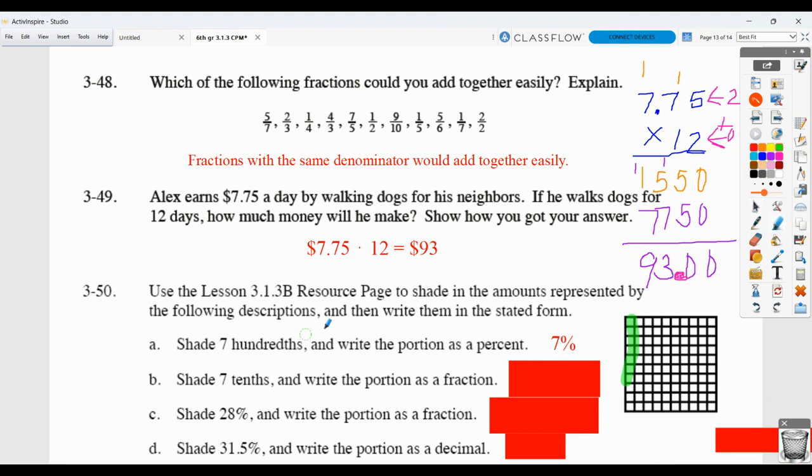Here, they want you to shade seven-tenths. Remember, a tenth is a full row or a full column. One, two, three, four, five, six, seven-tenths. Write that as a fraction, they're saying. Well, that's seven-tenths as a fraction, or 70 hundredths. Seven-tenths would be considered simplified because the numerator and denominator don't have anything they can divide by other than one, where here we could divide them both by ten.